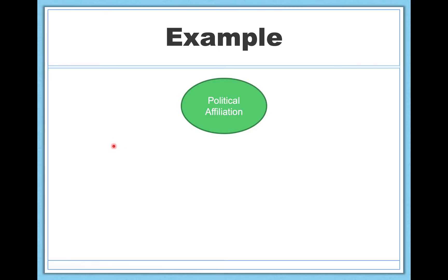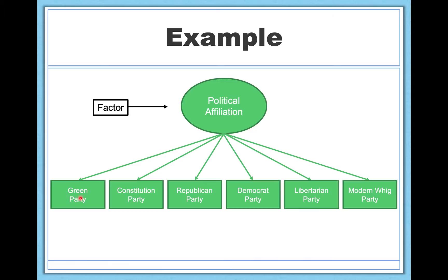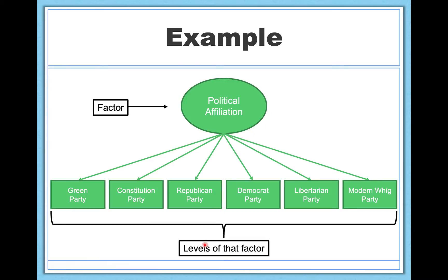For example, consider the factor of political affiliation — our independent variable. We want to know whether it makes a difference on the response variable, the dependent variable. Political affiliation has many different levels: the different political affiliations you can be a part of — Republican, Democrat, and so on. These are the levels. And the response variable is aggression — the outcome variable that we care about.